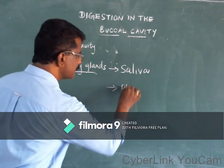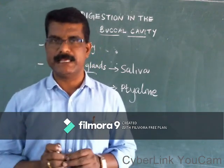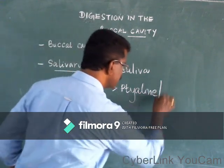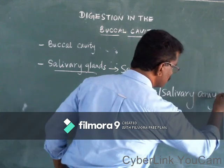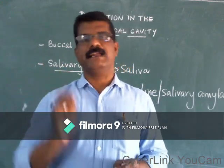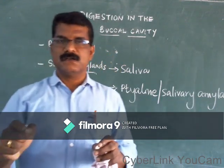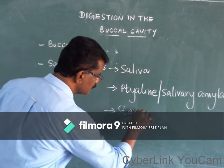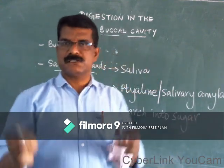Saliva consists of an enzyme that is known as ptyalin — spelled P-T-Y-A-L-I-N. Ptyalin is otherwise known as salivary amylase. This salivary amylase or ptyalin helps for the digestion of starch into sugar.